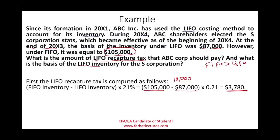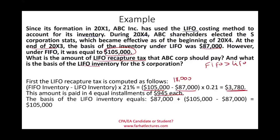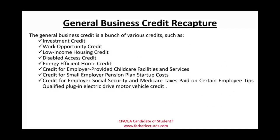Does ABC have to pay the $3,780 immediately? Not at all. They can break it into four equal installment payments of $945 each. What is the new basis of the inventory under LIFO? The original basis was $87,000; since taxes have been paid on the $18,000 difference, that amount is added, bringing the LIFO inventory basis up to $105,000. You accelerated the gain, paid the taxes on it, and increased your inventory basis.